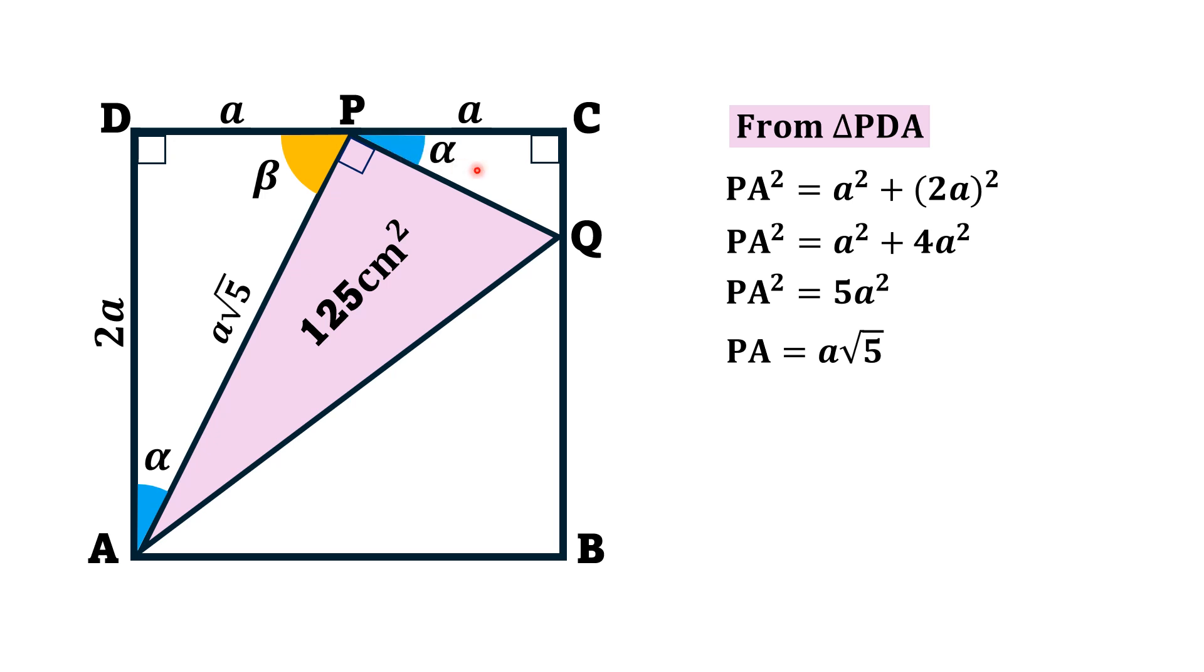This angle is alpha. Again, in triangle PCQ, one angle is of 90 degrees, other angle is of alpha, then definitely the third angle is beta degree angle. Now, the two triangles PDA and PCQ are similar due to angle-angle similarity.